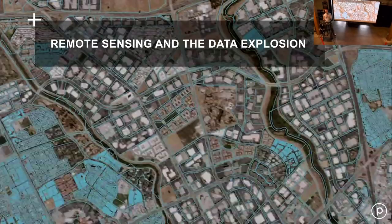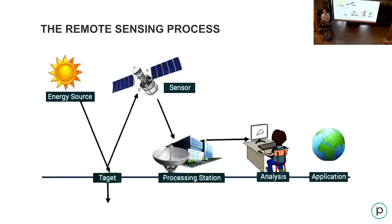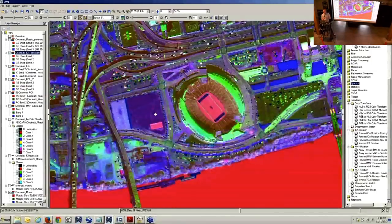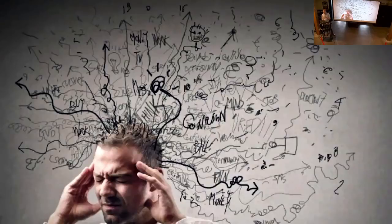So how is remote sensing handling this data explosion? We have this data online, with more coming every day. The big problem is that the standard remote sensing process only scales with more people. There's a person sitting at a desktop — that's a key step in the traditional process. All kinds of really cool analysis is possible, but it depends on a person operating their machine and bringing their human ingenuity for the best results. With millions of images coming down, it's just too much even if we hire 10 or 100 times the number of people.